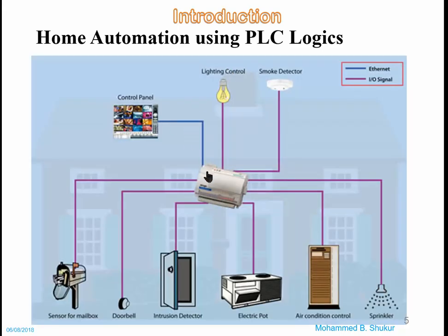Home automation using PLC logics. Here we have an example. We can see from this example, this PLC can be controlled by a control panel. Then this PLC controls many devices, for example, the air conditioner, the electric pot, the light control. Also, this PLC accepts signals from sensors, from the smoke detector, or from the sensor for mailbox, from the doorbell.